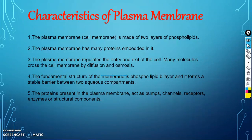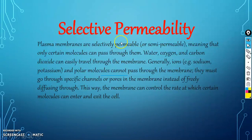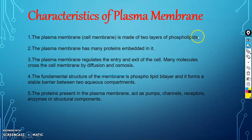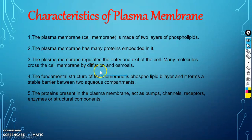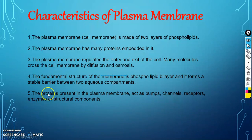The basic characteristics of the plasma membrane: it is made up of two layers of phospholipids. The plasma membrane has many proteins. It regulates the entry and exit of molecules across the cell membrane by diffusion and osmosis. The fundamental structure is the phospholipid bilayer, which forms a stable barrier between two aqueous compartments. The proteins present in the plasma membrane act as pumps, channels, receptors, enzymes, or structural components.